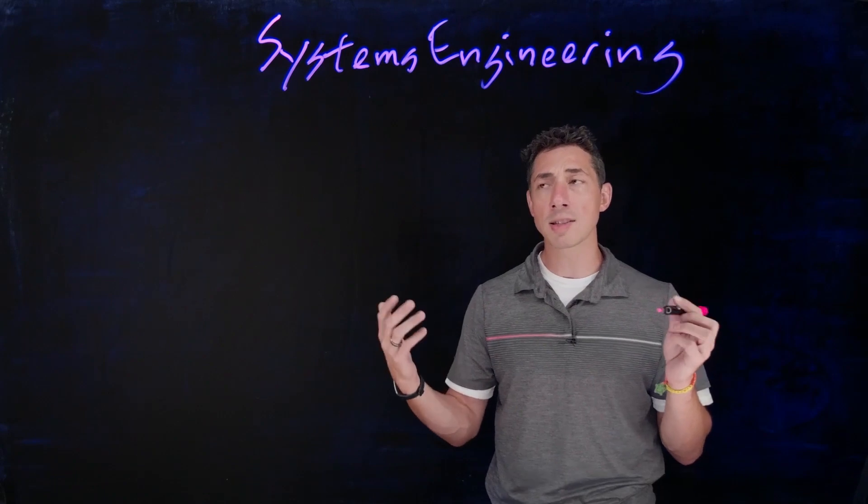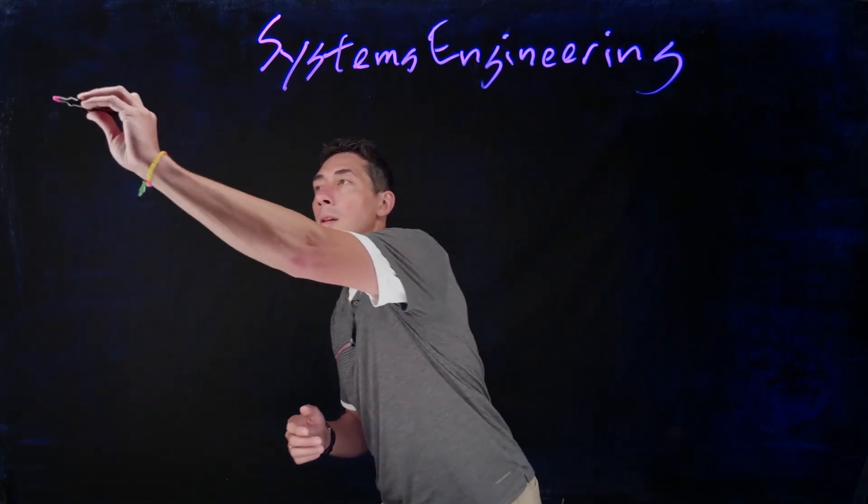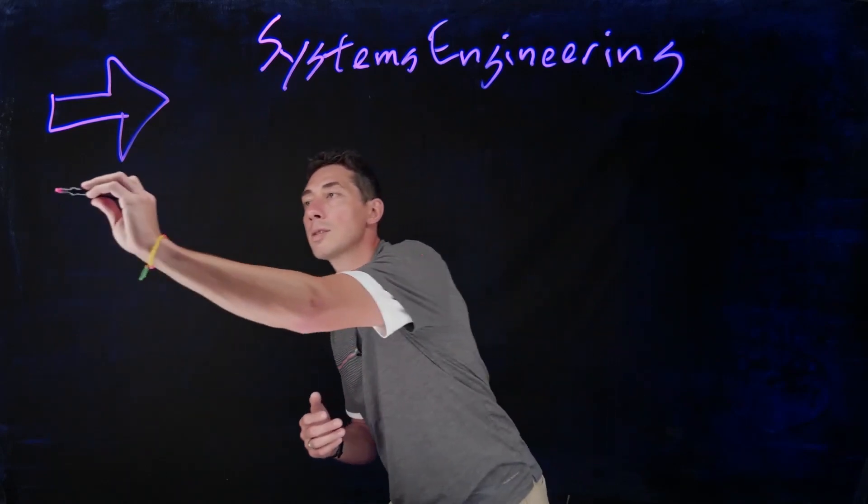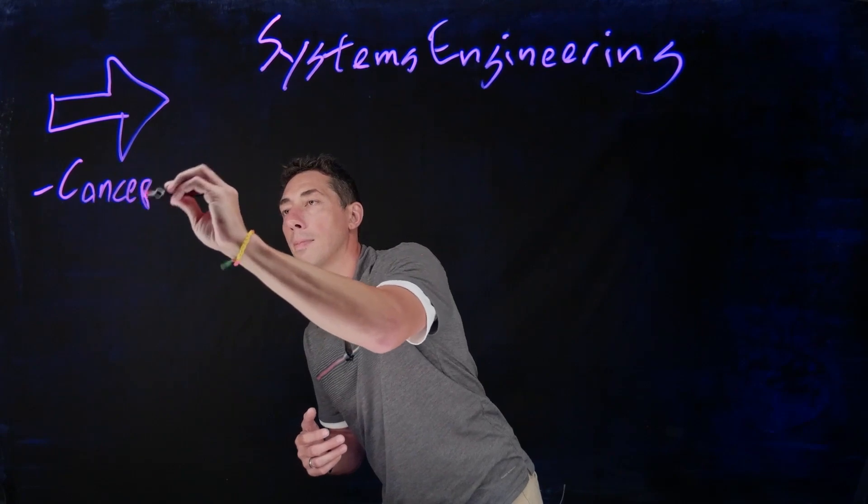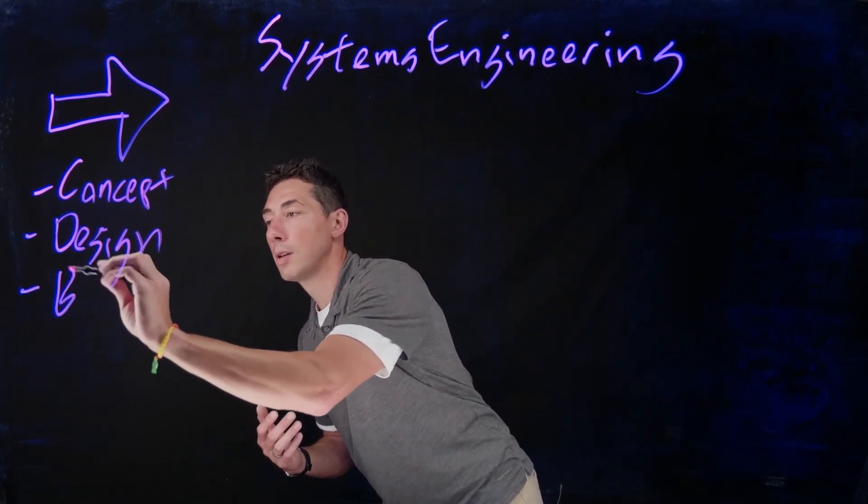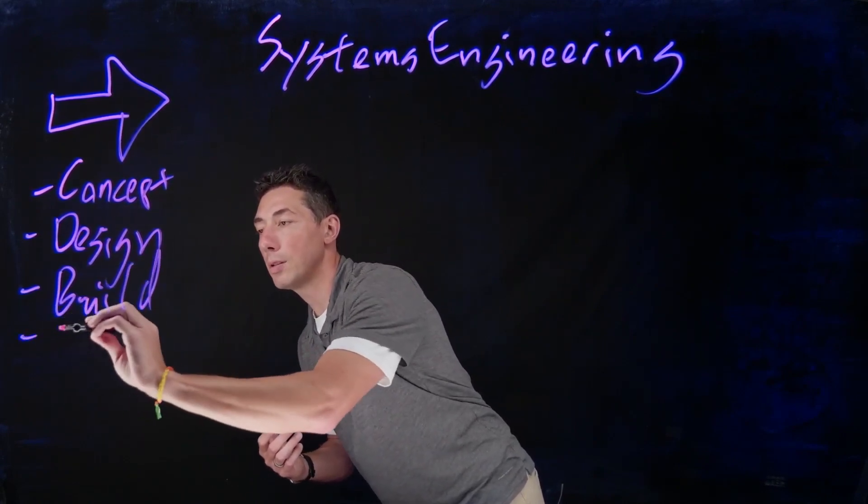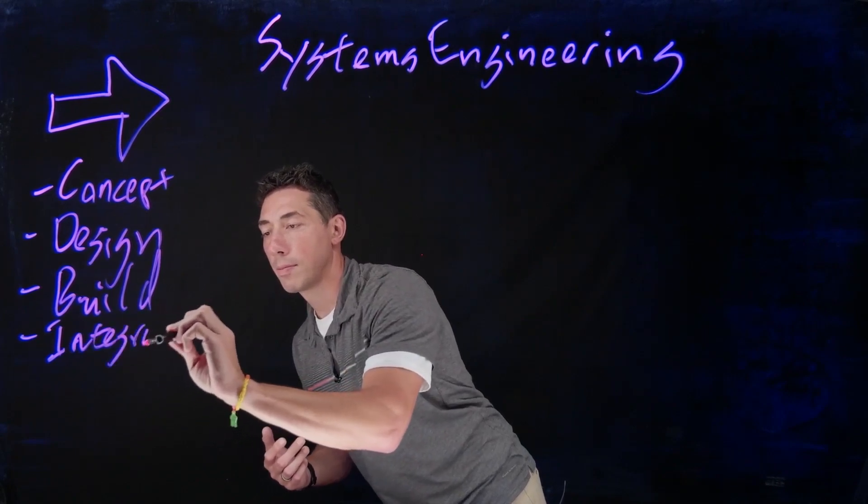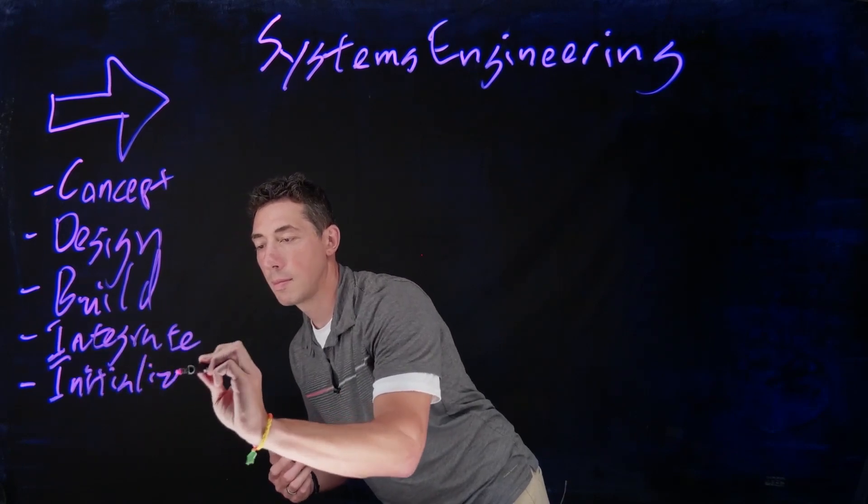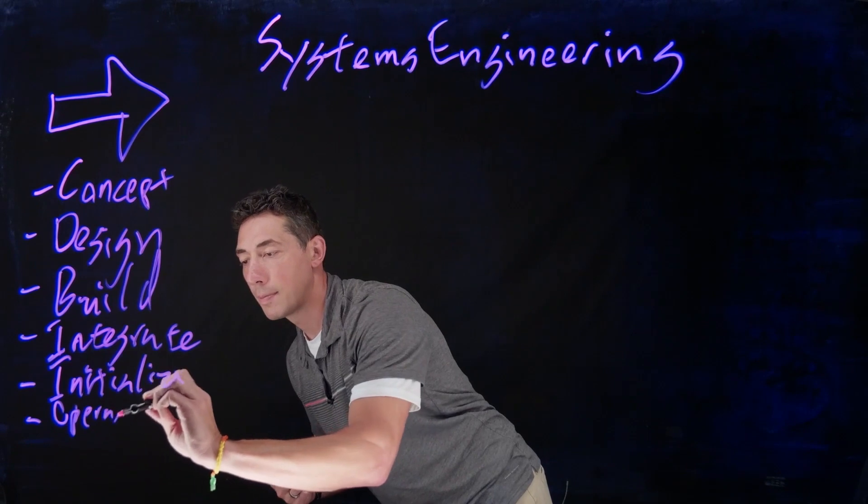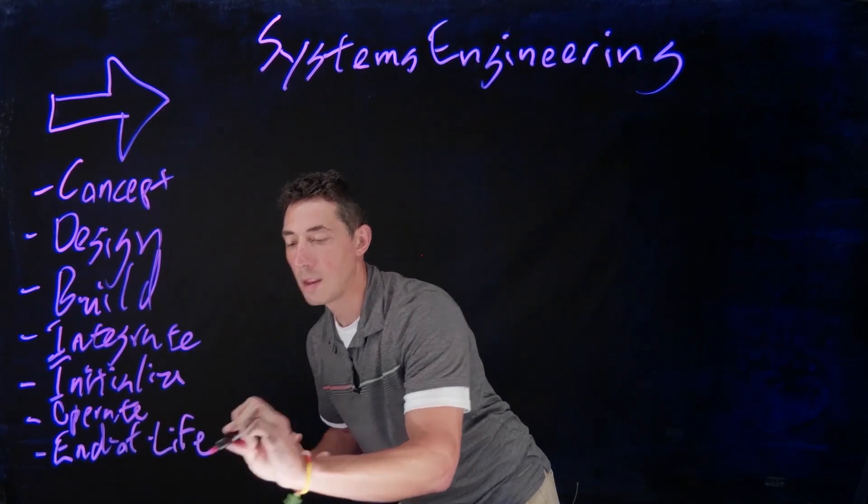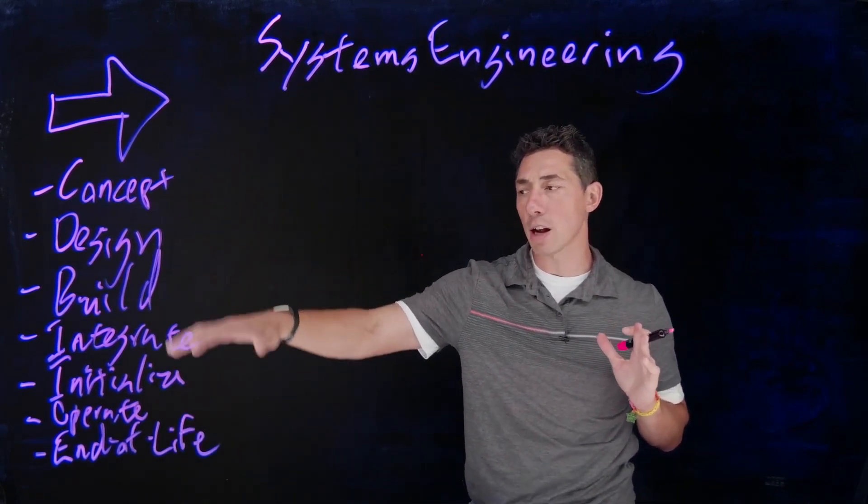So systems engineering starts with a concept of a life cycle. Every system is going to go through the same types of phases. You have your concept, you've got your design, build, integrate, initialize, operate, and then end of life. And every system is going to go through this general life cycle.